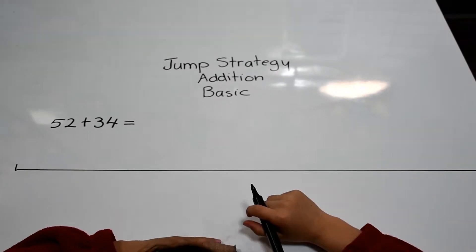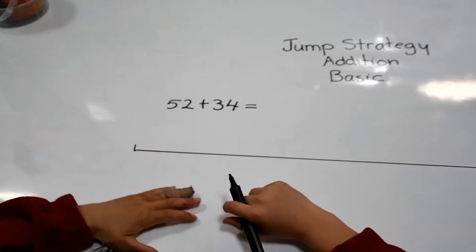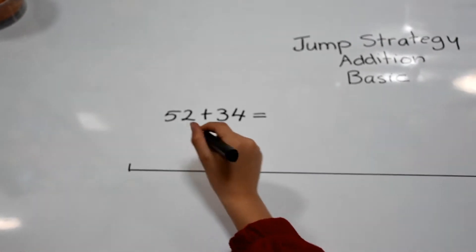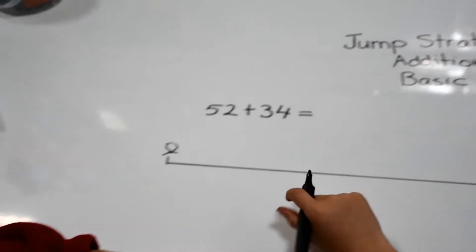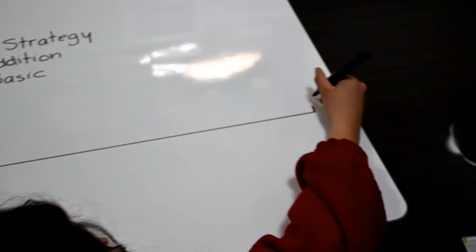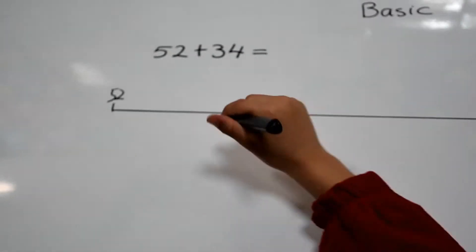This is Jump Strategy for Basic Mental Computation. We have 52 plus 34. 52 is the bigger number, so it goes at the start. At the end here is the number that 52 and 34 make. We start by adding three tens.